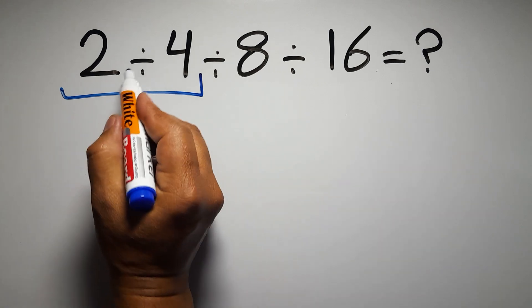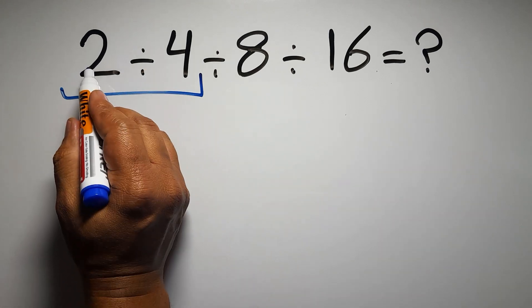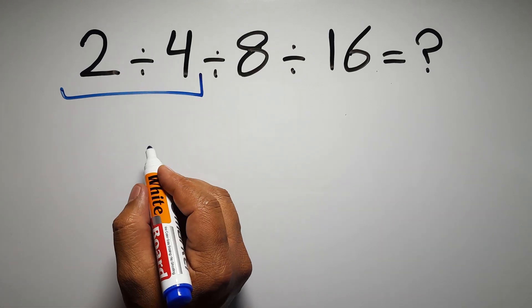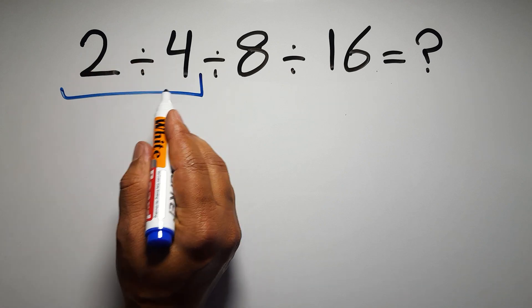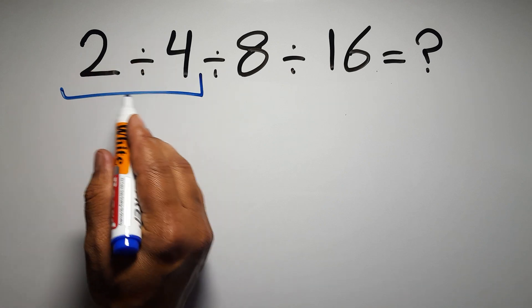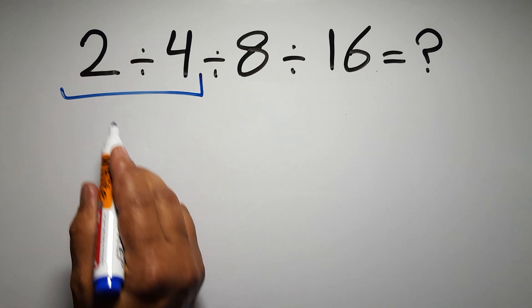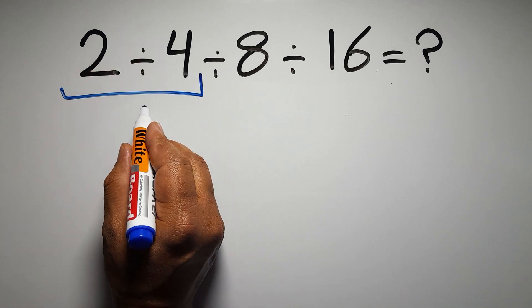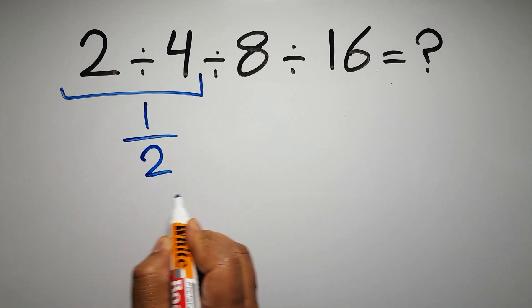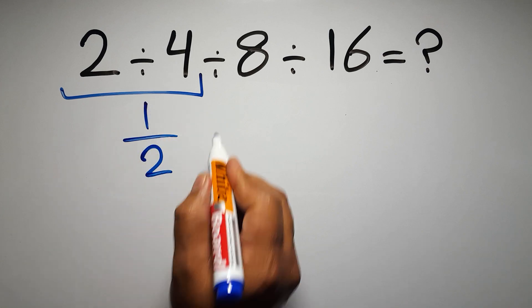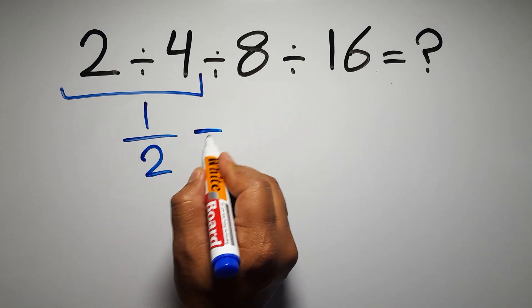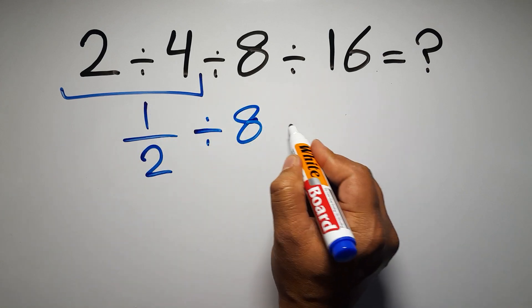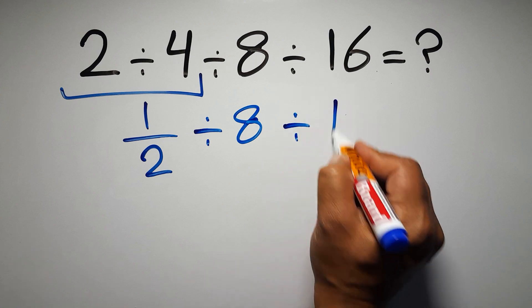So first, this division: 2 divided by 4 can be written as 2 over 4, and 2 over 4 is the same as 1 over 2. So we have 1 over 2, divided by 8, divided by 16.